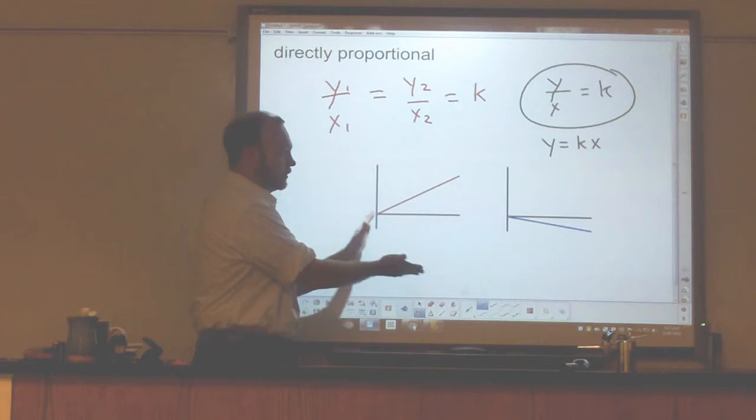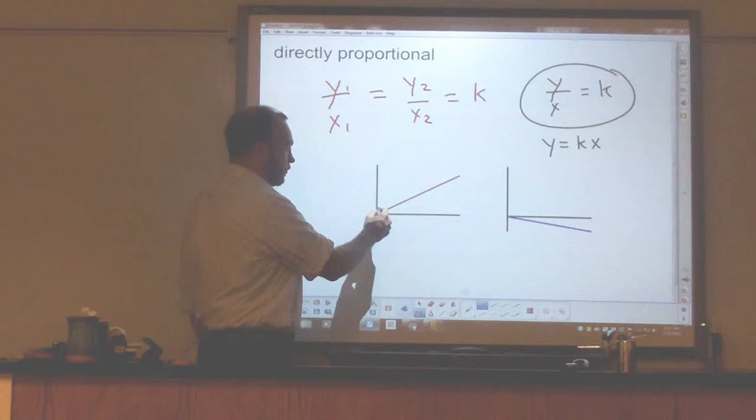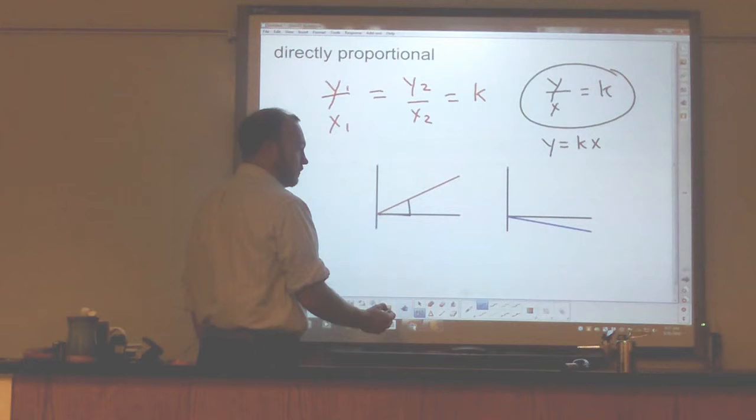A lot of times, in a hurry, when teachers are teaching this, they say that when things are directly proportional, when one goes up, the other goes up the same amount. Now, when the x value goes up, the y value goes up. If you go by that same x value again, that y value will go up by the same amount again. It is directly proportional.